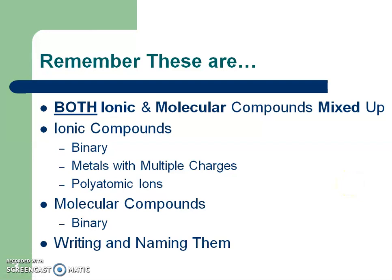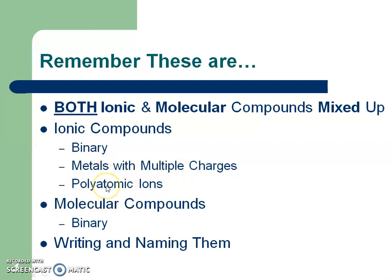When we look at ionic compounds, remember there are three main types: your binary, which would be a metal and a non-metal; your metals that sometimes have multiple charges; and of course those compounds that have polyatomic ions.